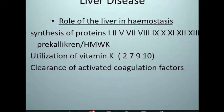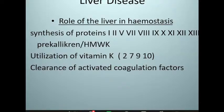Moving on to liver disease. The liver is the primary site for synthesis of most coagulation factors. It also requires vitamin K for carboxylation of some factors — specifically factors 2, 7, 9, and 10 — to make them active. The liver is also important in clearing activated coagulation factors; complexes formed with inhibitors are removed in the liver.